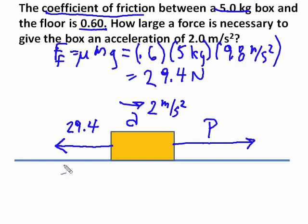We find the net force. We have a diagram. The net force is the pull minus the 29.4, P minus 29.4. Net force equals ma.